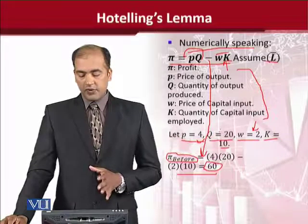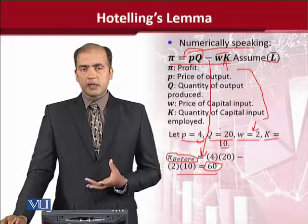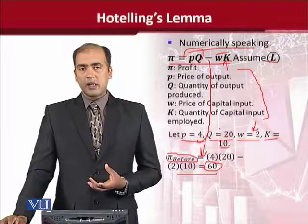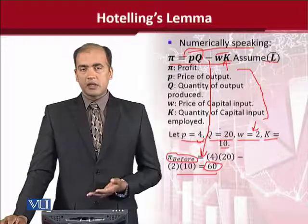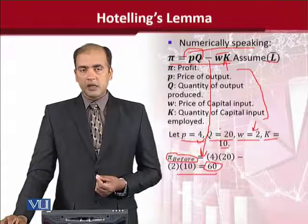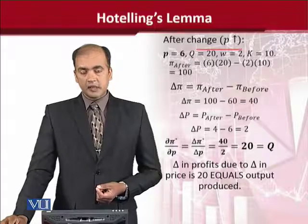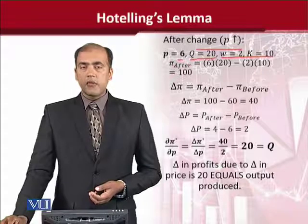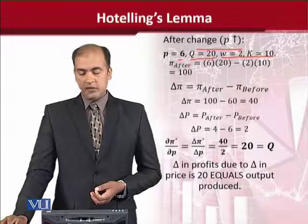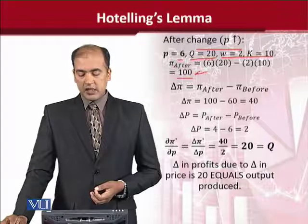The change we will introduce, as per the formula, will be in price — because in the denominator, if you remember, there was price, delta P. When there is a change in price, what change will occur in profit — this is what we saw in that expression. So now we will change the price and see what impact it has. In this case we increased the price from 4 to 6, and we assume that the output remains the same, and the other two variables also retain the same values. Then we calculated profit again, and in this case instead of 60, the answer came out to 100.